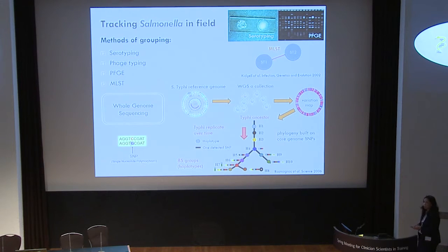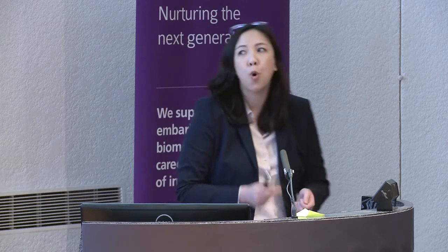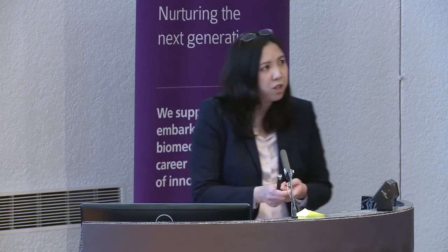You take your collection of typhi isolates and map them to a reference genome, producing a variation map based on single nucleotide polymorphisms, or SNPs. This allows you to build a history of evolution or phylogeny over time and type any isolate. It allows you to track transmission pathways and look at the spread of epidemics within and between countries.